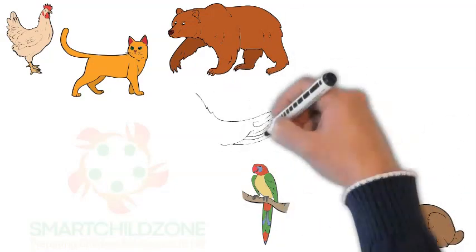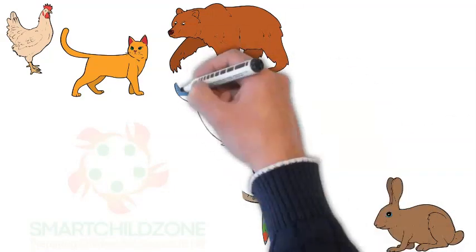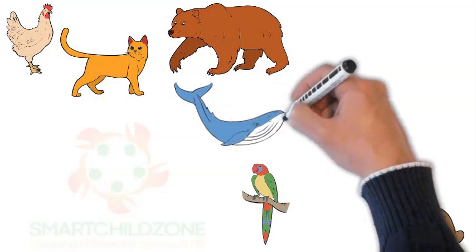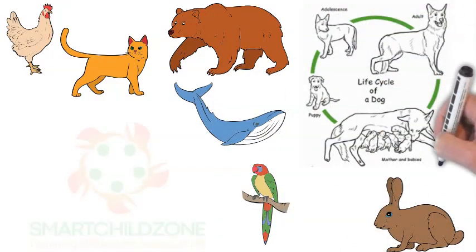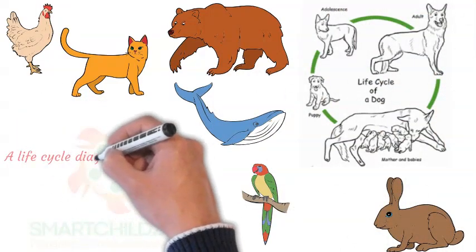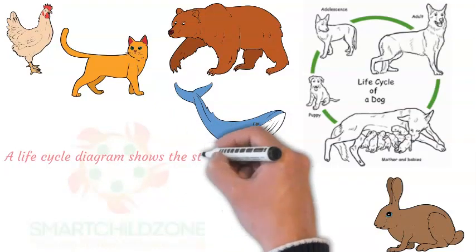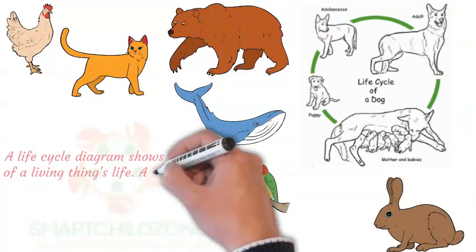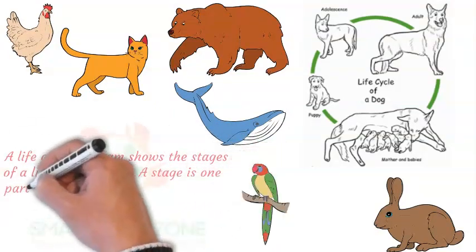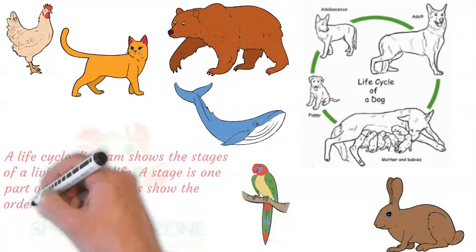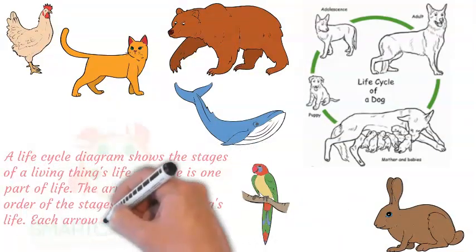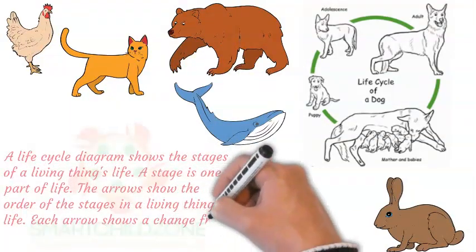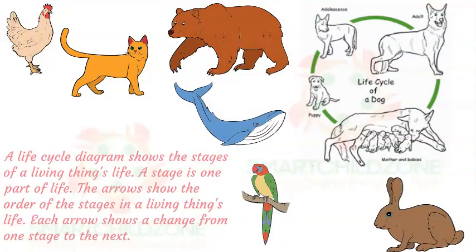Living things change during their lives. They are born, grow older, and die. They also make new living things like themselves. A life cycle diagram shows the stages of a living thing's life. A stage is one part of life. The arrows show the order of the stages, and each arrow shows a change from one stage to the next.